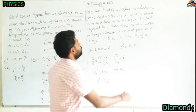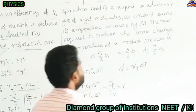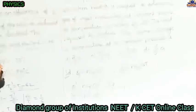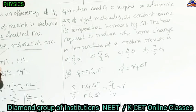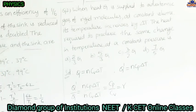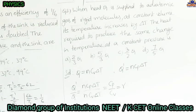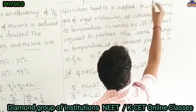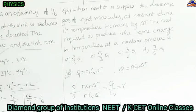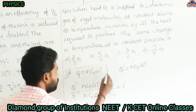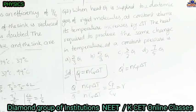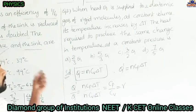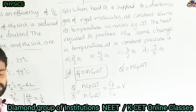Next question: when heat Q is supplied to a diatomic gas at constant volume, its temperature increases by ΔT. The heat required to produce the same change in temperature at constant pressure is to be found. Heat supplied to a gas at constant volume: Q = NCV ΔT.